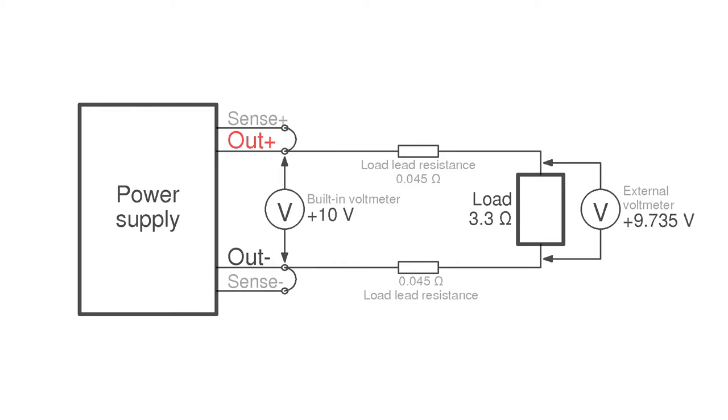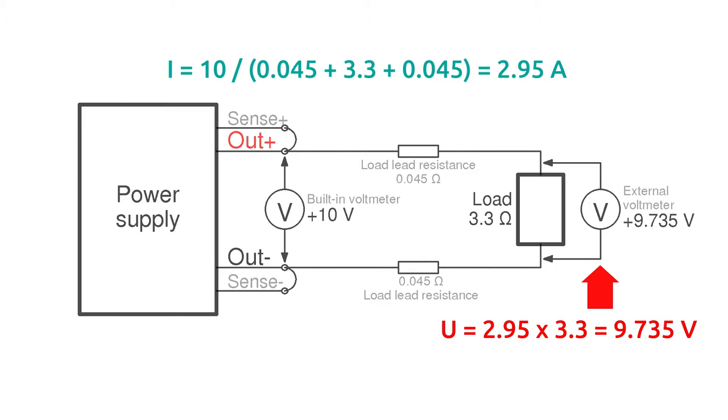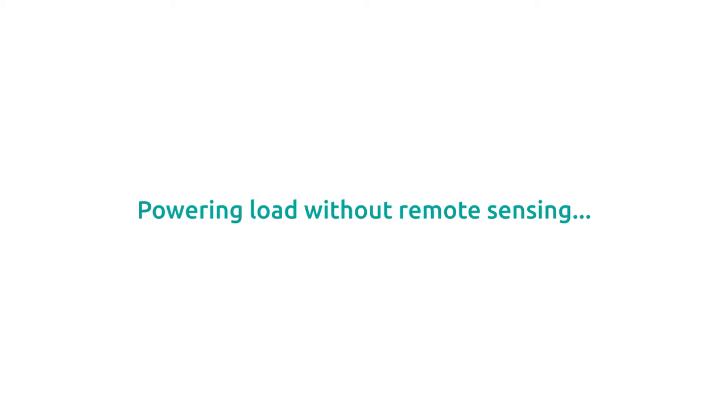So power supply is set to 10 volts and connected with some very cheap cables with crocodile clips on one side and a 3.3 ohm load. We can see then more than 200 millivolts voltage drop can be expected on load terminals, which can be measured using external voltmeter. So let's do it.